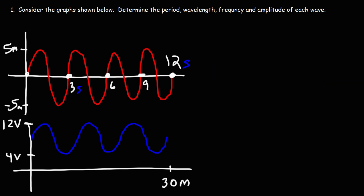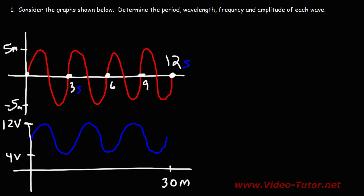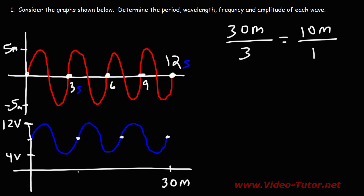For the blue wave, the x-axis has meters, which lets us find the wavelength. We don't have seconds on the x-axis, so we can't find the period or frequency for the blue wave. There are 3 cycles over 30 meters, so 30 divided by 3 equals 10 meters per cycle — the wavelength is 10 meters.